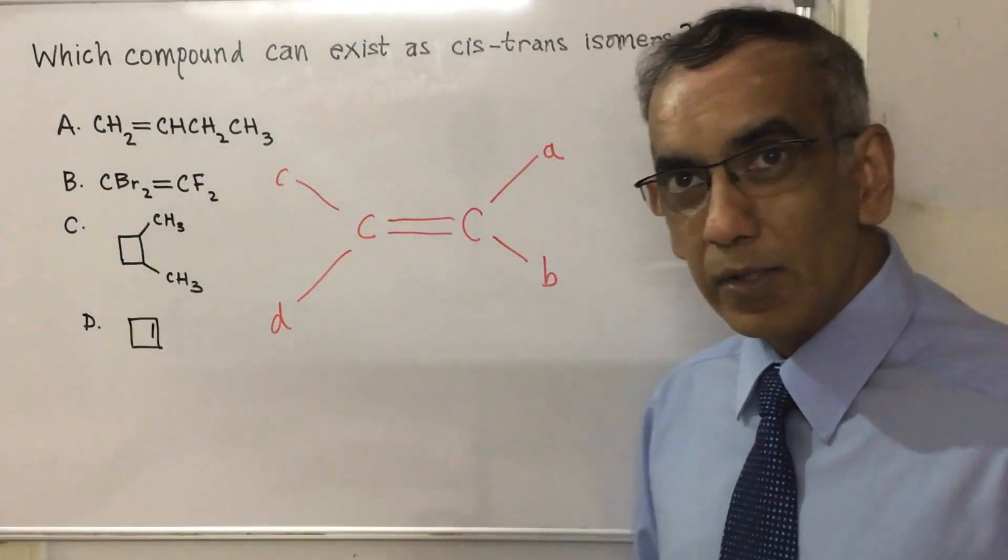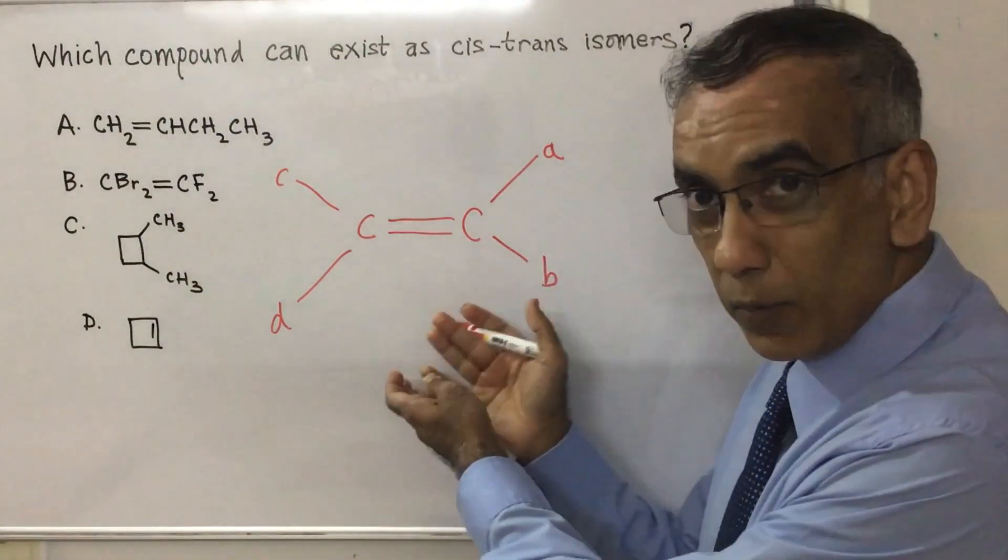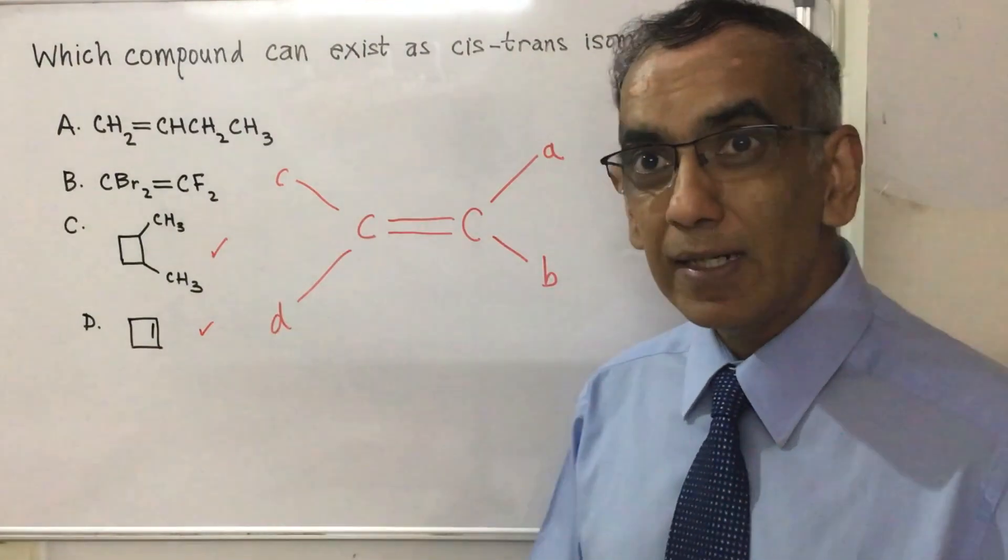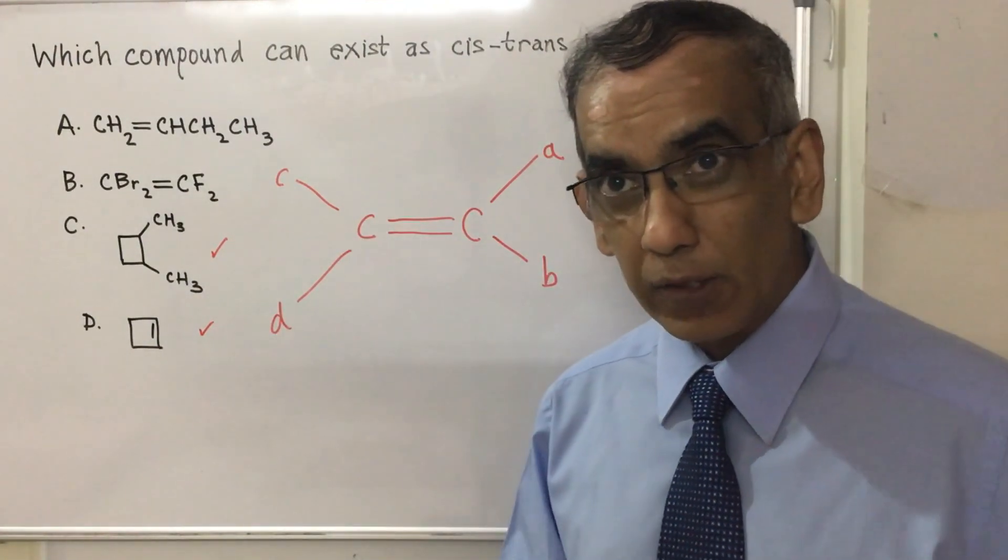And then you talk about cis-trans isomerism in structures like this one. But it neglects the possibility of cis-trans isomerism existing in ring structures, in cyclic structures.